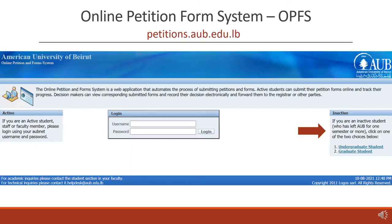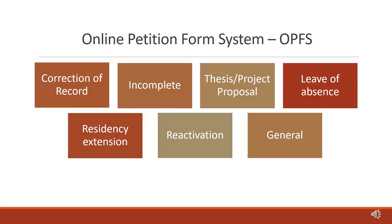Petitions are used to make specific requests to the faculty. The most common types are: a Correction of Record petition, used to add or delete courses after the registration and drop-and-add period have closed; an Incomplete petition, used if you need to request an incomplete for a course; a Thesis or Project Proposal petition, used to submit your proposal and indicate the members of your thesis or project committee; and a Leave of Absence petition, used if you need to take a semester away from your studies. You should petition at least one month before the start of the semester, unless you have unforeseen circumstances.